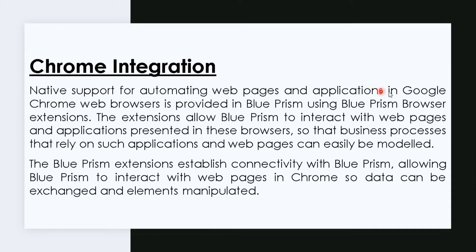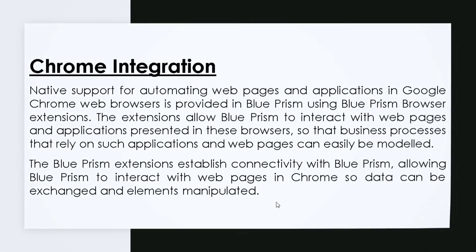Chrome integration — native support for automating web pages and applications in the Google Chrome web browser — is provided in Blue Prism using Blue Prism browser extensions. These extensions allow Blue Prism to interact with web pages and applications presented in the browser, so that business processes that rely on such applications and web pages can easily be modeled. We are going to use Blue Prism browser extensions to resolve all the issues which occur in Chrome automation.